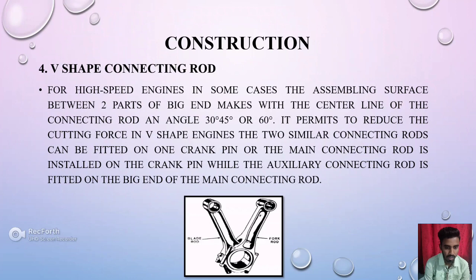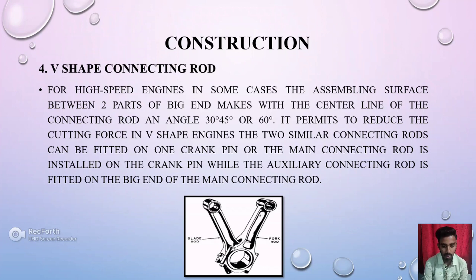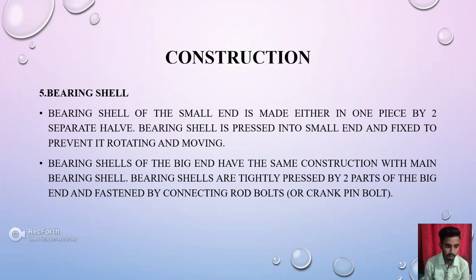Fourth is the V-shaped connecting rod. For a high-speed engine, in some cases, the assembling surface between two parts of the big end meets at an angle with the center line of the connecting rod at 30 to 45 degrees or 60 degrees. This permits reducing the connecting force in V-shaped engines. Two similar connecting rods can be fitted on one crank pin, or the main connecting rod is installed on the crank pin while the auxiliary connecting rod is fitted on the big end of the main connecting rod.